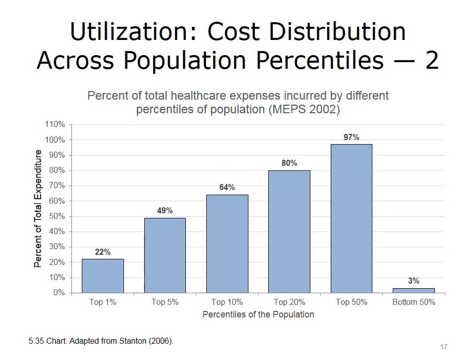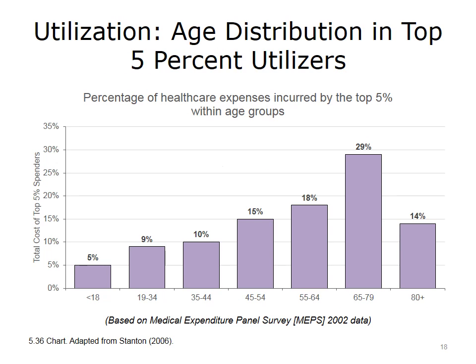This bar chart shows the percent of total healthcare expenses incurred by different percentiles of the population, based on the 2002 MEPS data. As shown, almost 50% of the population falls within the bottom 3% of spenders, and almost 20% of the population creates 80% of the spending. The top 1% of spenders created more than 20% of the total cost. This bar chart also shows the distribution of age within the top 5% of healthcare utilizers, where the percentage of spending is much higher in the elderly age groups. Indeed, the 65 to 79 age range includes almost a third of the top 5% of utilizers.